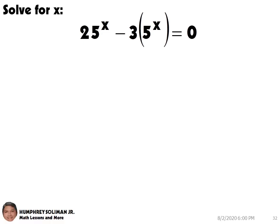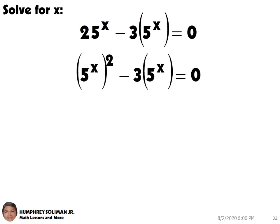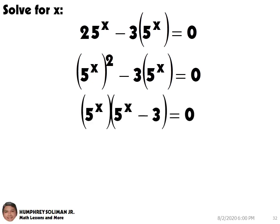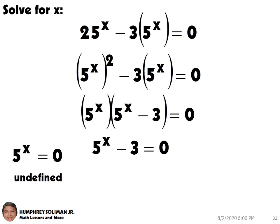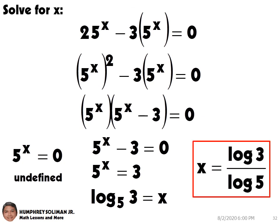Let's have an example. We have an exponential equation that resembles a quadratic equation, if we write 25 raised to x as the square of 5 raised to x. If we write this in factored form, we can have this, and then equate each factor to 0. 5 raised to x equals 0 is undefined. And, 5 raised to x minus 3 equals 0 will become 5 raised to x equals 3. In logarithmic form this will be log base 5 of 3 equals x. Using the change of base, this will be x equals the logarithm of 3 over the logarithm of 5.